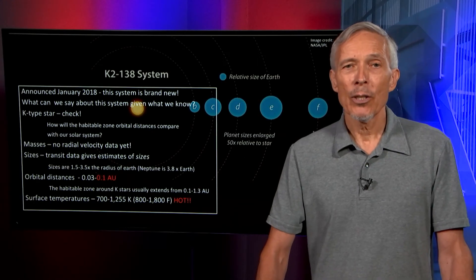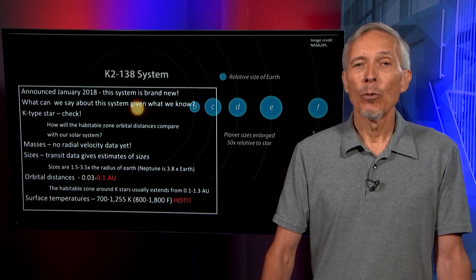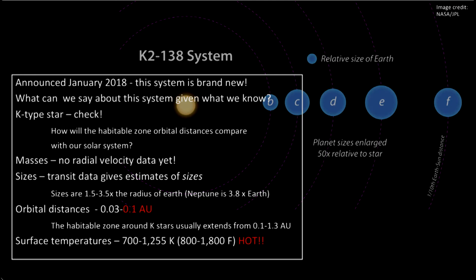Let's look at another system more recently discovered in 2018, the K2-138 system. This was found by the Kepler satellite in its twilight mission called K2, when it had lost some of its pointing capability and started doing broader swath surveys for exoplanets with lower efficiency than its original survey, but with still very interesting results. What can we say about this system so far?